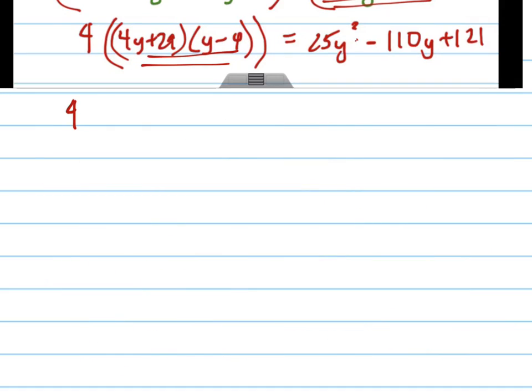I will get 4 times, I'm just going to go ahead and FOIL this thing out right here. That becomes 4y squared minus 29y, sorry, plus 29y, minus 16y, minus, I'm going to give myself some more space here. 29 times negative 4 is like 30 times negative 4, which would be negative 120, but it's 4 less than that, so it's negative 116.